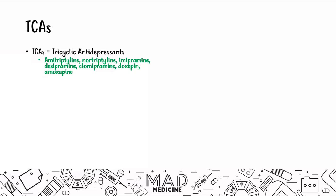You can try to memorize these based on their suffix — the '-triptyline' ending and the '-ipramine' ending always give a clue that a drug is a TCA. The last two, doxepin and amoxapine, don't conform to this suffix rule, so just memorize those. For step one psychiatry, the two hardest things are remembering the diagnostic criteria timelines and the names of drugs within each class.